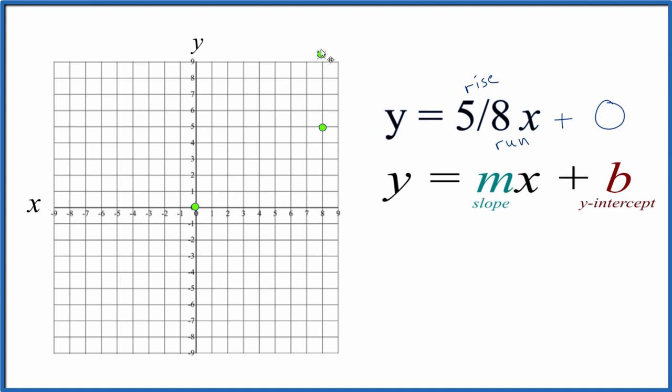We could go up five and over eight again, but we'd be off our graph. So let's go down five and over eight to the left, the opposite direction there. And there's our point.